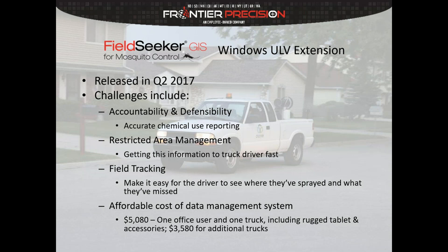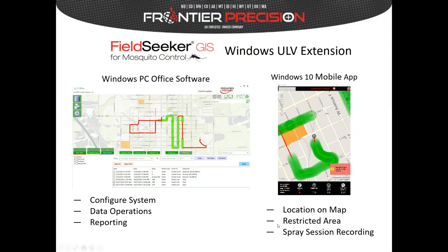It's built on our tried and true tested data collection engine that's been used for over 10 years by over 600 Sentinel and FieldSeeker adult sighting users. We've also tried to make it as affordable as possible. The approximate cost for the system for one office user and one truck is $5,080, and this includes the rugged tablet and vehicle mounting accessories. You can also add the system to additional trucks for about $3,580.